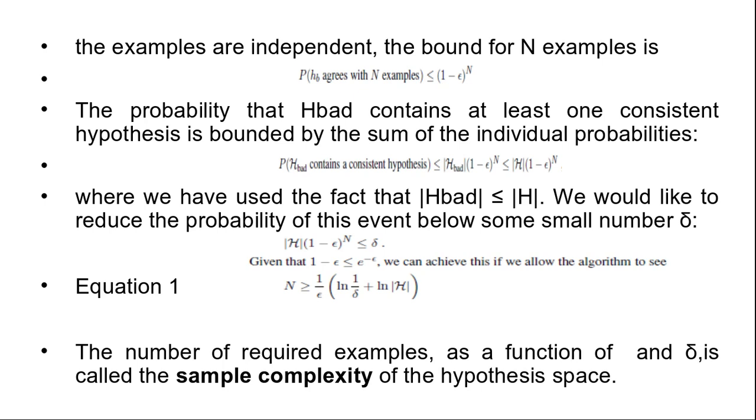We would like to reduce the probability of this event below some small number delta. Given that 1 minus epsilon is less than or equal to e to the power minus epsilon, we can achieve this if we allow the algorithm to see N examples where N is greater than or equal to 1 by epsilon times log of 1 by delta plus log of mode H. Thus, if a learning algorithm returns a hypothesis that is consistent with this many examples, then with probability at least 1 minus delta it has error at most epsilon. In other words, it is probably approximately correct. The number of required examples as a function of epsilon and delta is called the sample complexity of the hypothesis space.